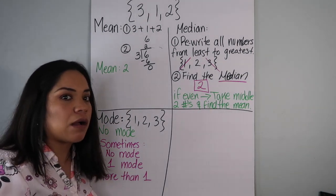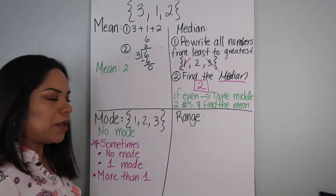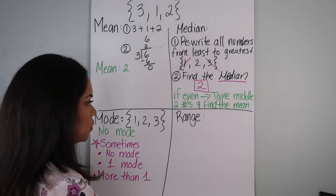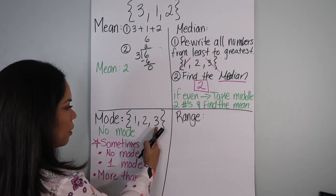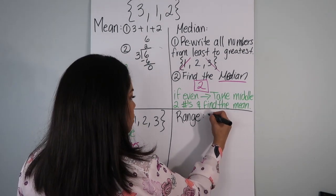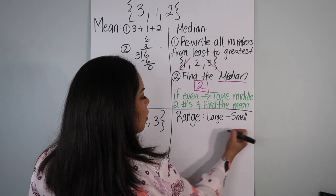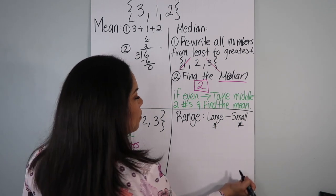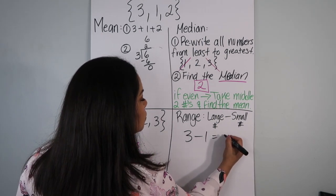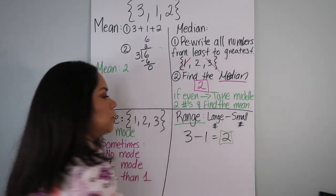The last thing I want to talk about is the range. The range is the difference between the largest and the smallest value. So you're going to subtract the large number minus the small number — that will equal the range. Three minus one equals two. Your range is two.